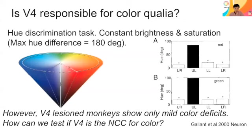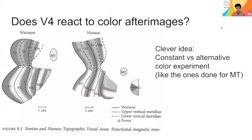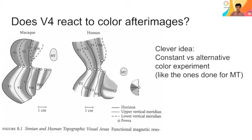We can also test whether V4 is a neural correlate of consciousness for color. Using fMRI, one approach is to use color afterimages. Based on the MT motion case from last week, a similar design can be applied to color: constant versus alternating color presentation combined with fMRI. Constant motion produces motion aftereffects whereas alternating motion does not, and a similar thing can be done with color.